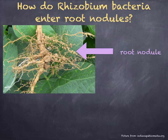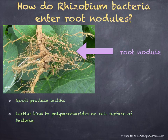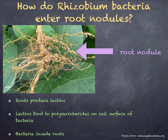Rhizobium bacteria live freely in the soil and are also found in the roots of leguminous plants, for example peas and beans. The nodules — the swellings on the roots — contain the bacteria. When a leguminous plant germinates, its roots produce proteins called lectins, which bind to the polysaccharides on the cell surface of bacteria. The bacteria then invade the roots, spreading along the root hairs, and stimulate some root cells to divide and develop into nodules inside which the bacteria form colonies.